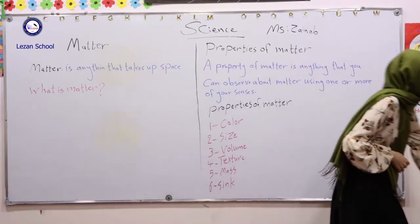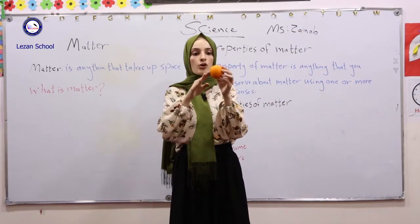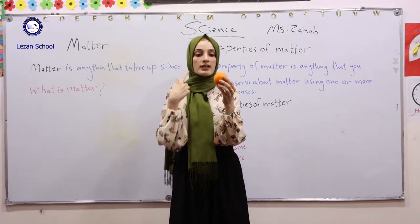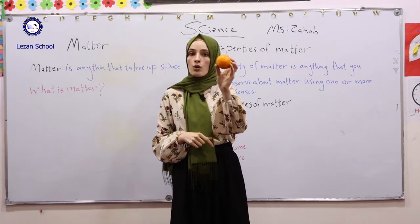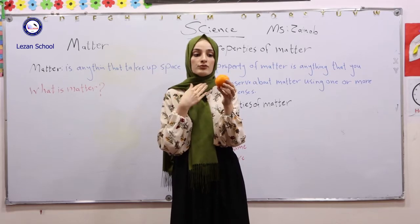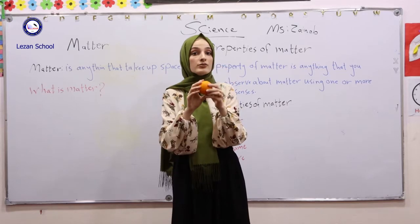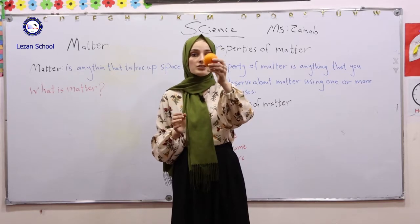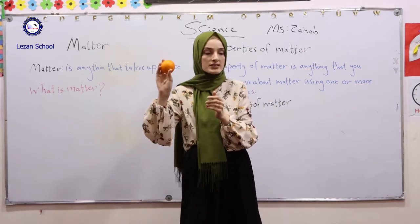And we have an orange here. We can use our senses to observe the properties of it. For example, if you use the sense of sight, you can observe the color of it; it is orange. And you can observe the size of it; it is small. These are properties of this orange.